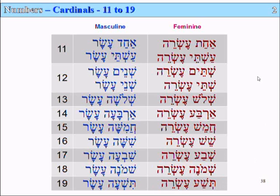The reason we have two different sorts of numbers — masculine and feminine — is because we may be counting things that are either male or female. Remember that things in Hebrew can be male and female: door, house, car in modern Hebrew. Everything is male and female.